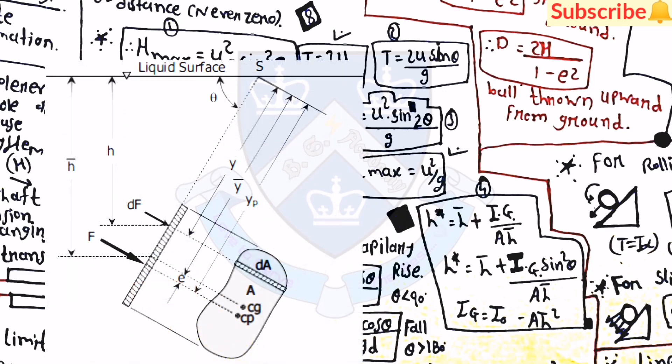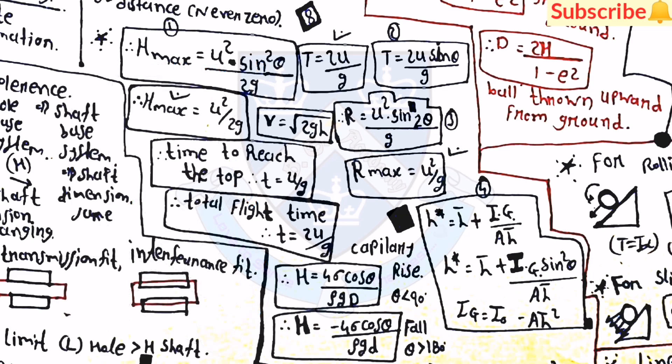Then h* is equal to h_bar plus I_g divided by area into h_bar. Then h* is equal to h_bar plus I_g sin theta by area h_bar. And I_g is equal to I_naught minus area h squared. Then for capillary rise, T is equal to 4 sigma cos theta by rho gd. Then h is equal to 4 sigma cos theta by rho gd. Then alpha is equal to tan inverse of a_t by a_n.